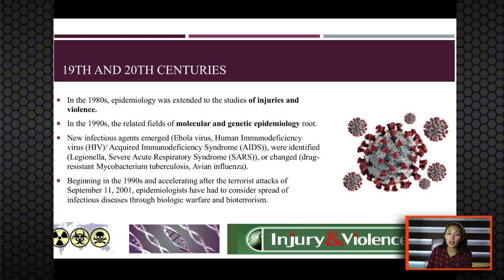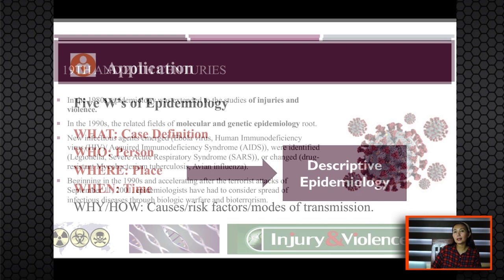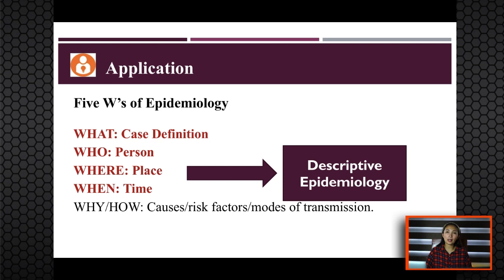Now we proceed with the application part. From our previous lecture, there are five W's of epidemiology: the what or case definition, the who or person, where or place, when or time, and why or how — the causes, risk factors, and modes of transmission. When we speak of descriptive epidemiology, it covers three W's: the who (person), the where (place), and the when (time).